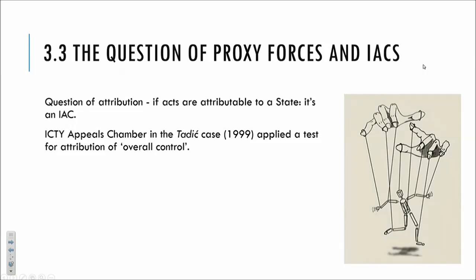The ICTY Appeals Chamber in the Tadic case in 1999 applied a test for attribution of overall control. This was reasonably easy in that case: certain Serbian ethnic forces fighting in the wars of dissolution in former Yugoslavia appeared to be operating independently at one level, but their officers had stayed on from the official forces, continued to be paid by the government in Belgrade, and arms, weapons and logistics were supplied. It wasn't particularly difficult to conclude that when your entire officer class belongs to, is paid by, and is supplied by a government, you are de facto operating as part of that government.